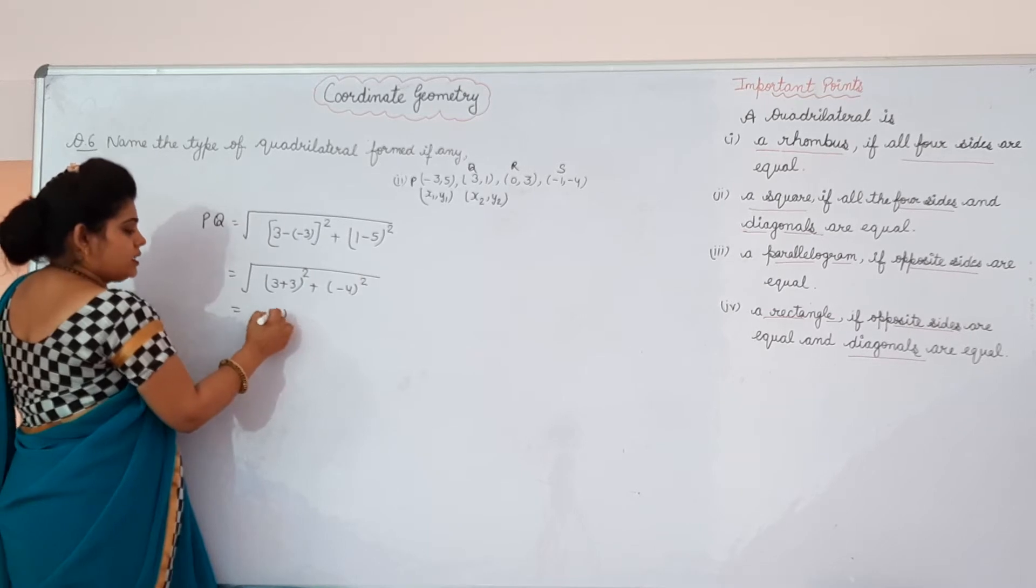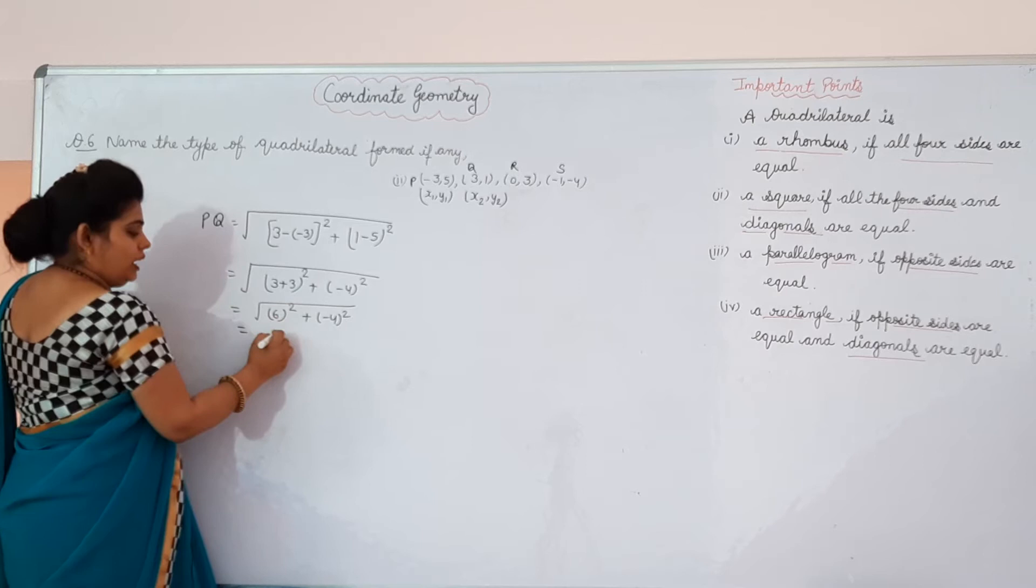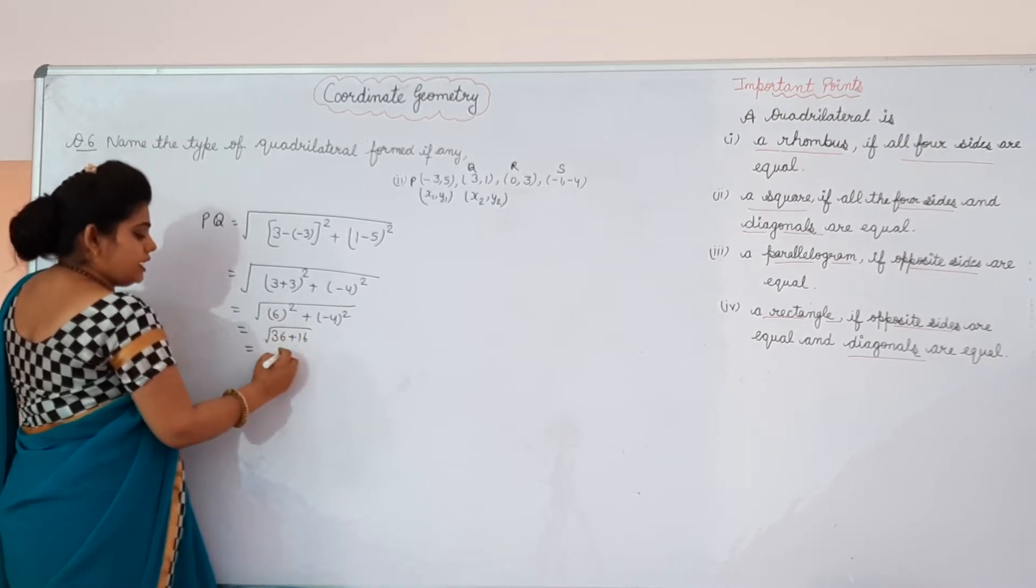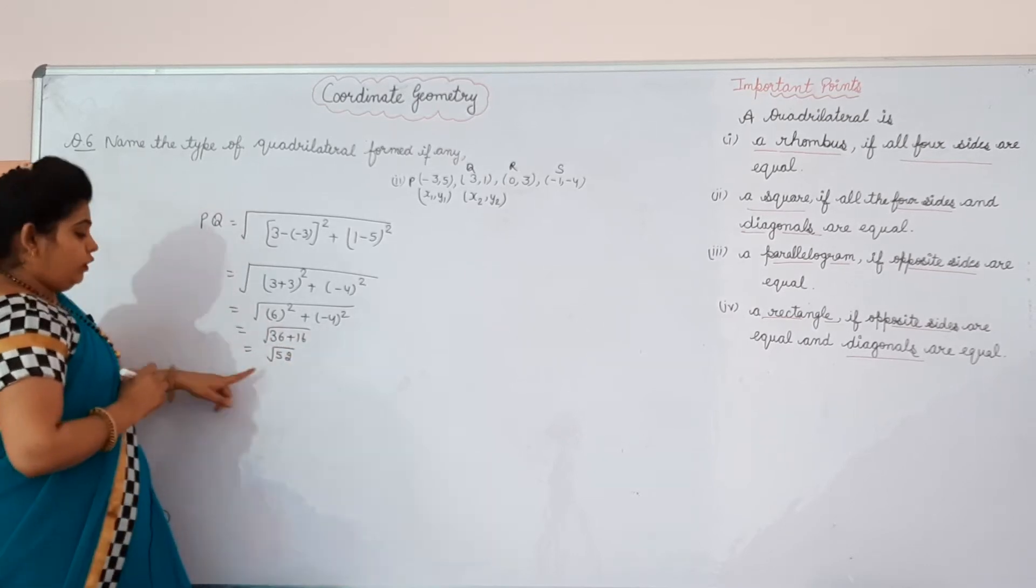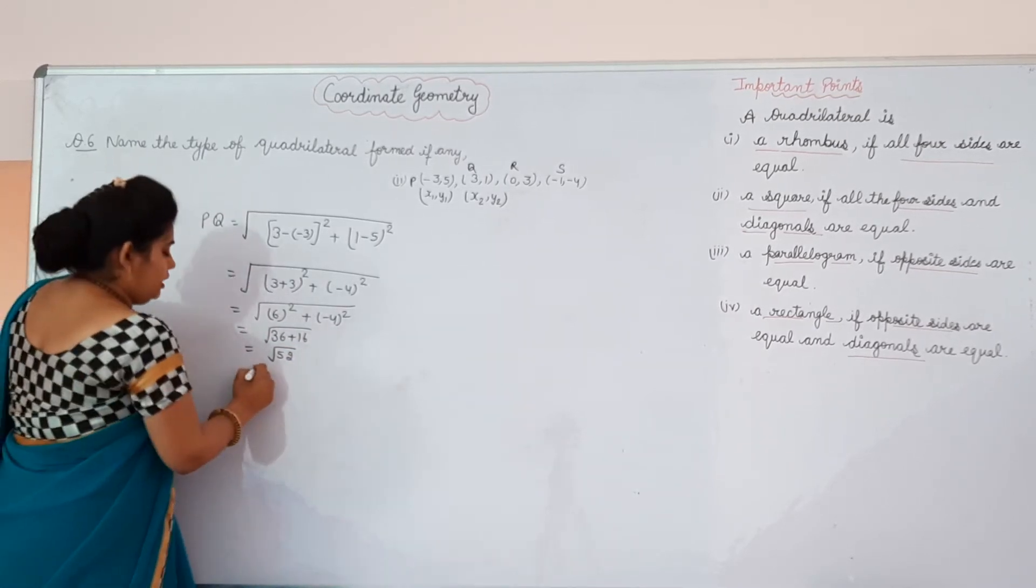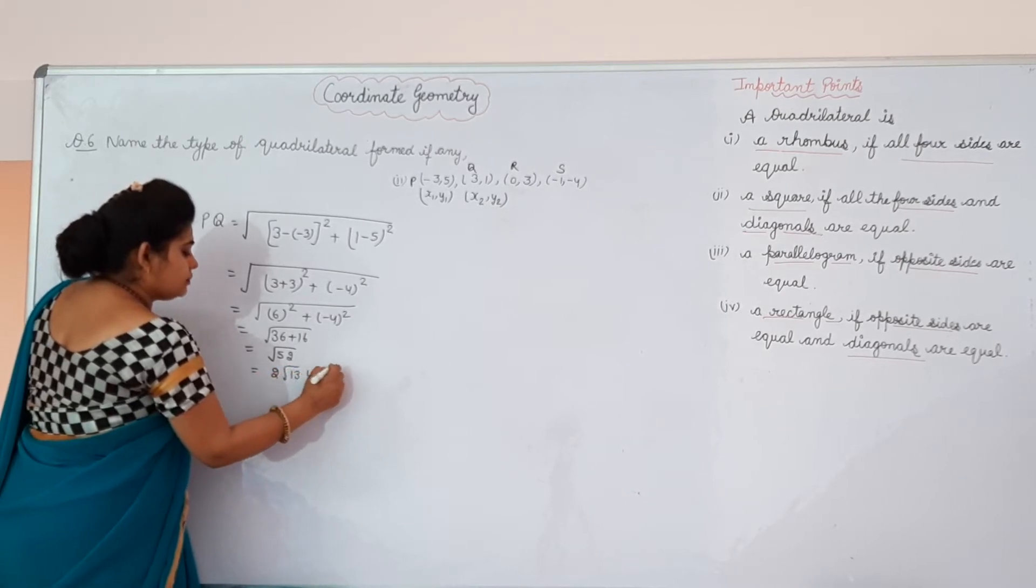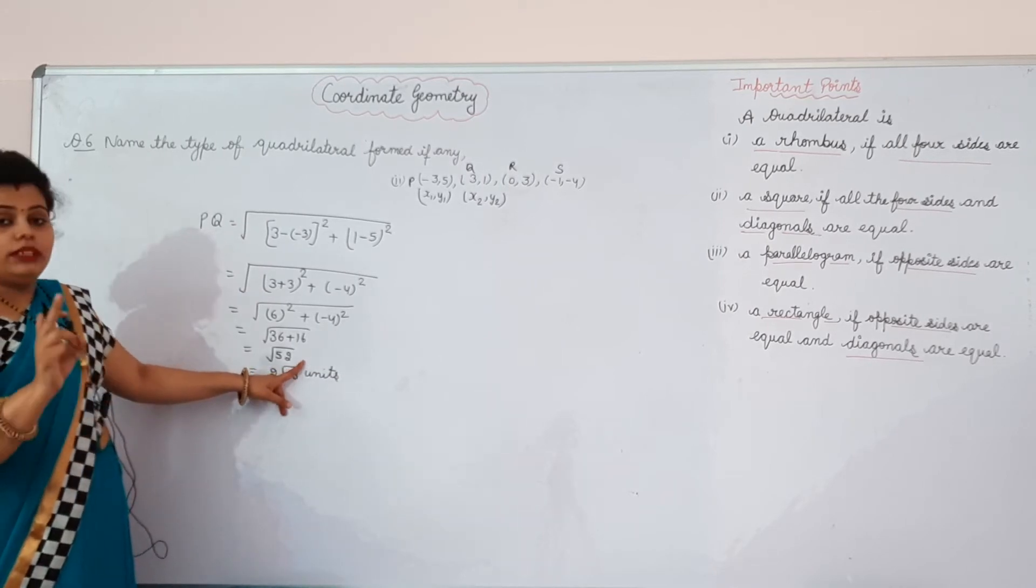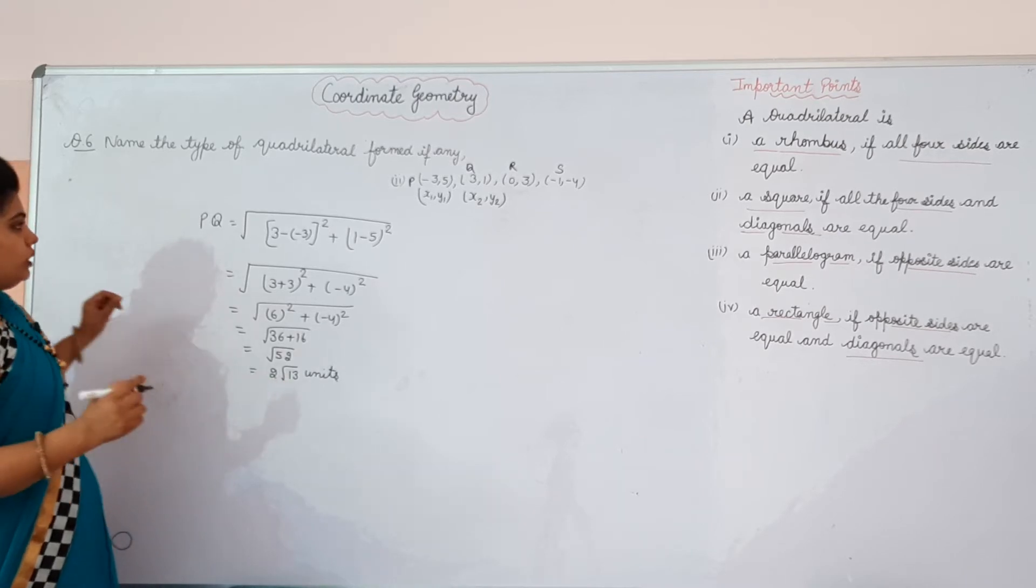From here, 6 whole square plus minus 4 whole square. What will come? 6 square 36, 4 square 16. From here root 52, or you can rewrite it as 2 root 13 units. After factorization, 52 will be 13 into 2 into 2, and on solving we will get 2 root 13 units.